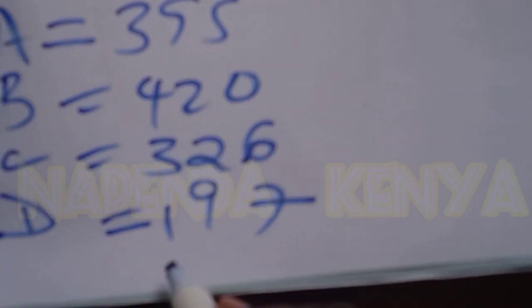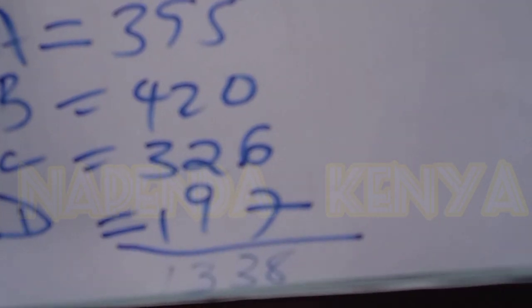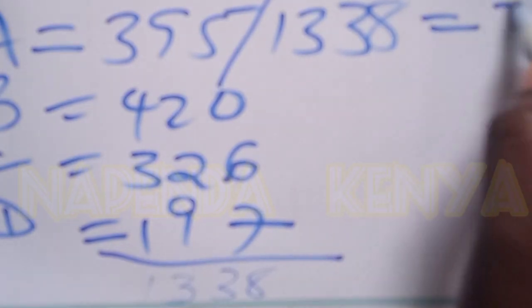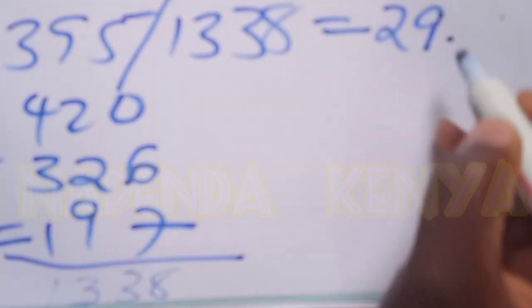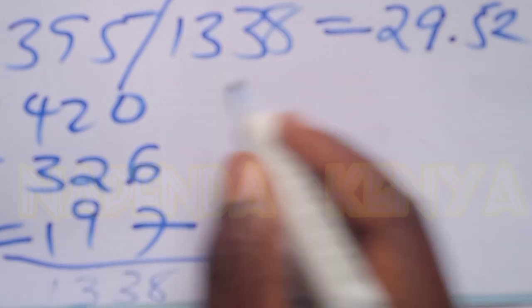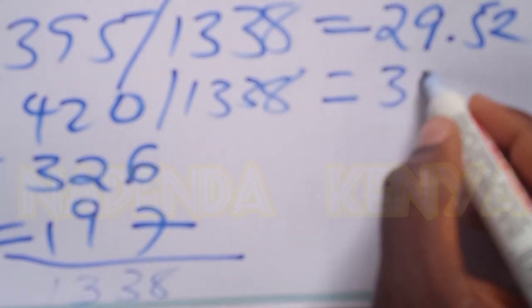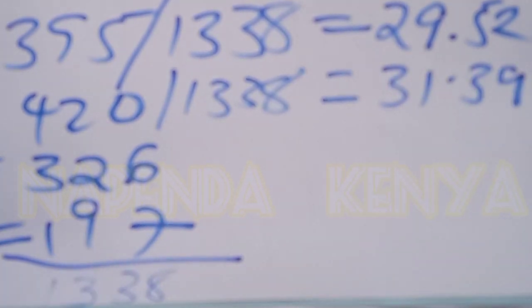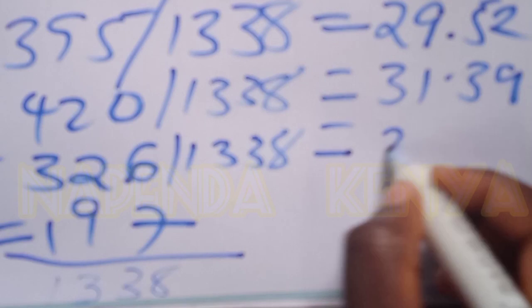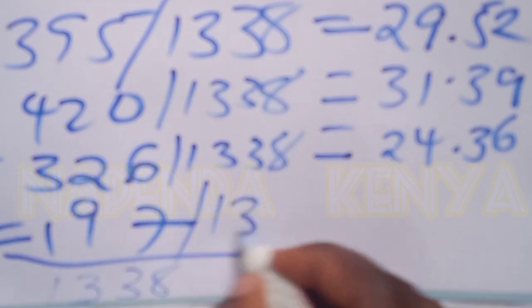Now how will it be? This total will be 1,338. So 395 out of 1,338 equals 29.52%. Then 420 out of 1,338 equals 31.39%. Then this other one, 326 out of 1,338 equals 24.36%. Then 197 out of 1,338 equals 14.72%.